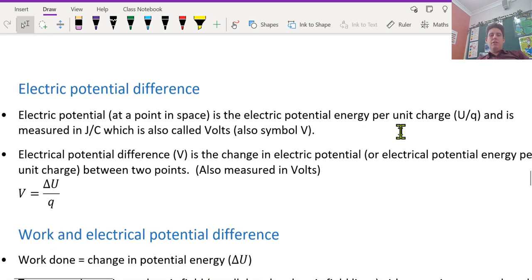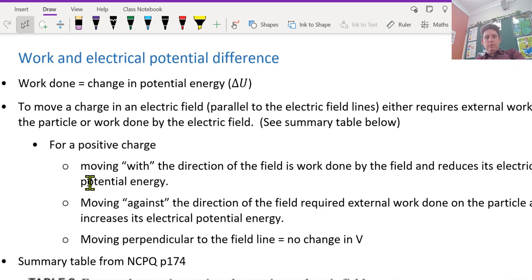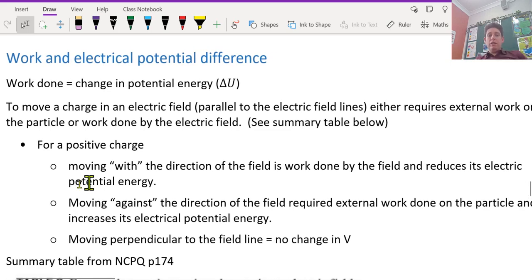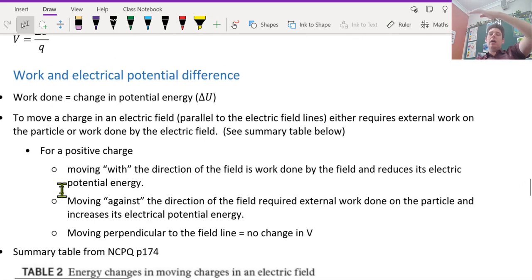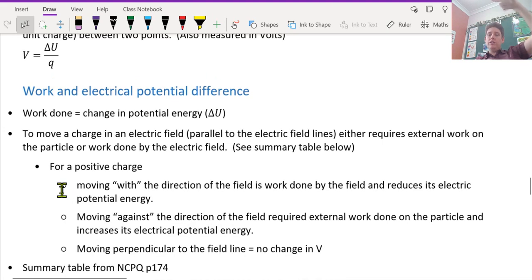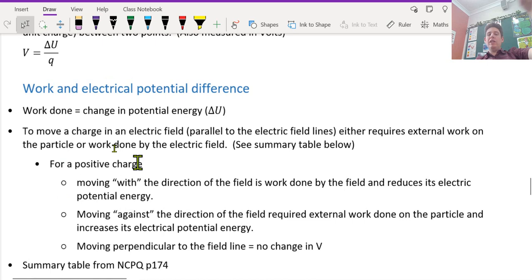Electric potential difference is the change in potential energy divided by the charge. To move a charge in an electric field either requires external work on the particle or work done by the field. So for a positive charge, moving with the direction of the field is work done by the field, and it reduces the electric potential energy. Moving against the field, it's external work on the particle. So we're pushing the particle through the field against the field, and we're increasing the electric potential energy.